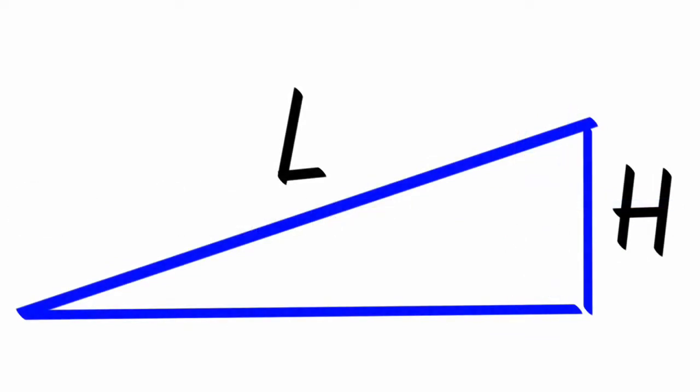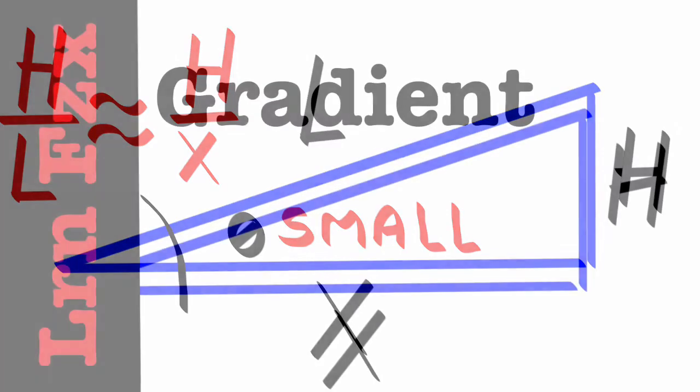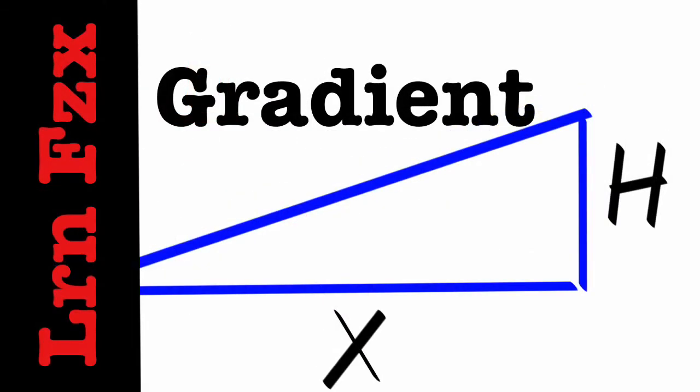Maybe the vertical drop over the length of the incline, because for small angles h over x and h over L are pretty much the same thing. It's pretty common. Gradient—get to know it.